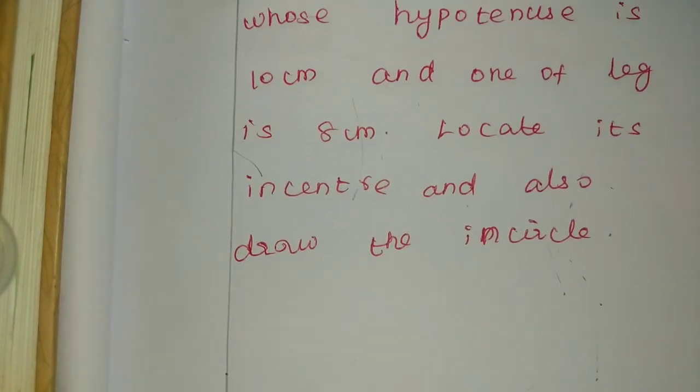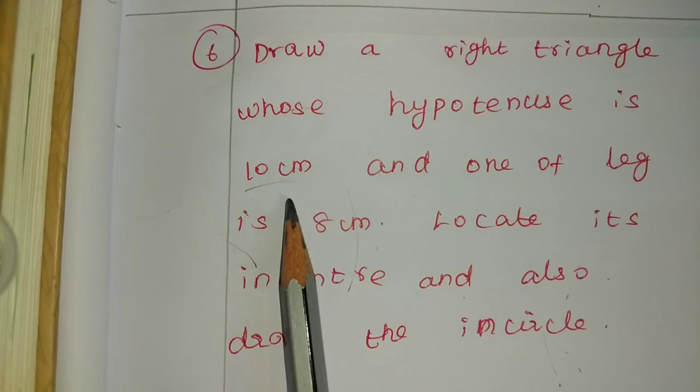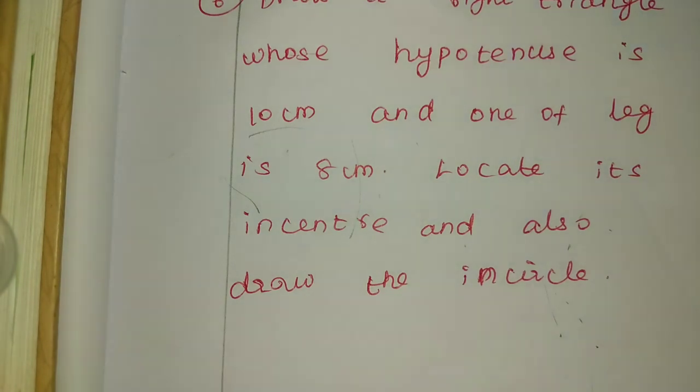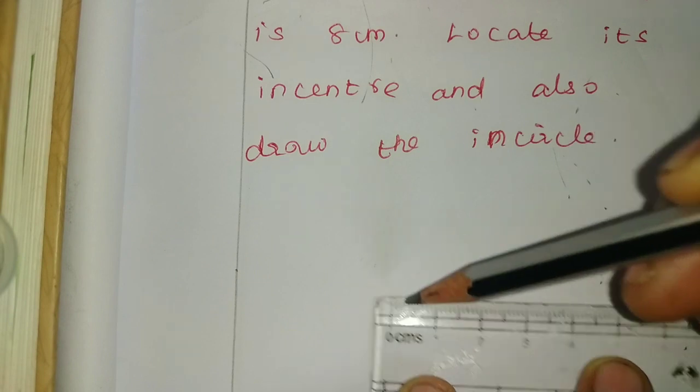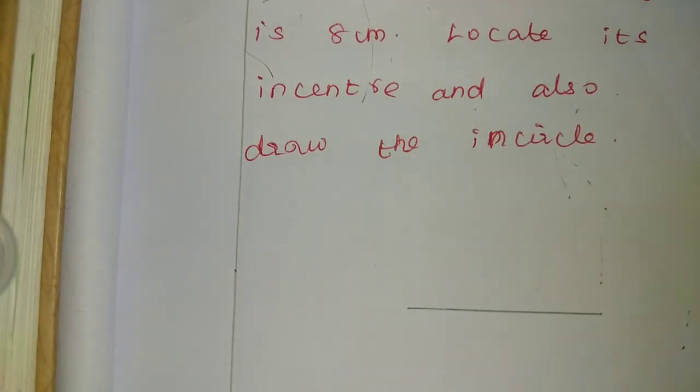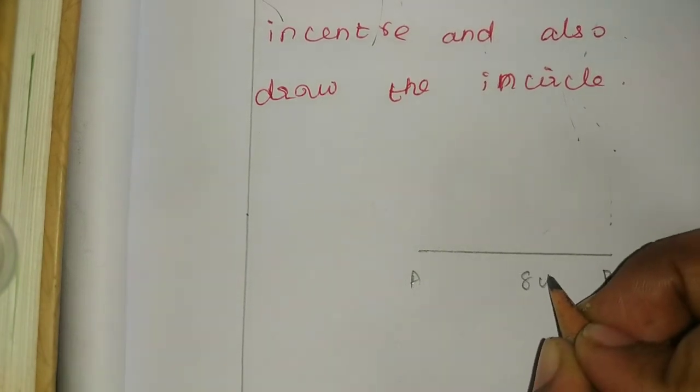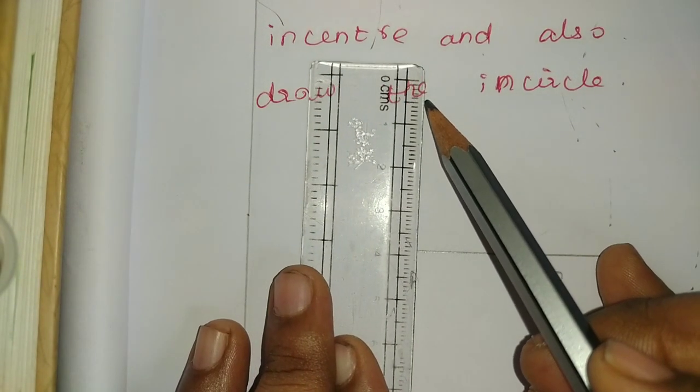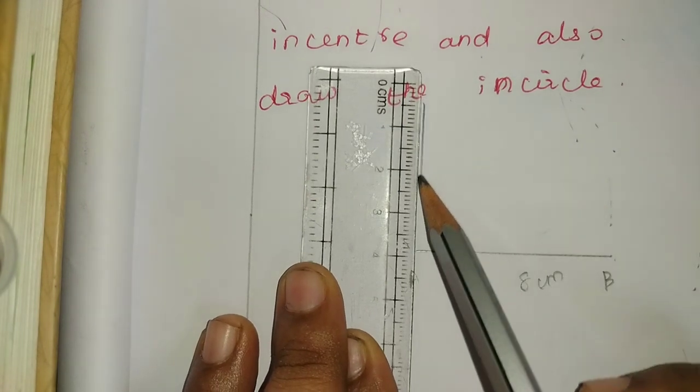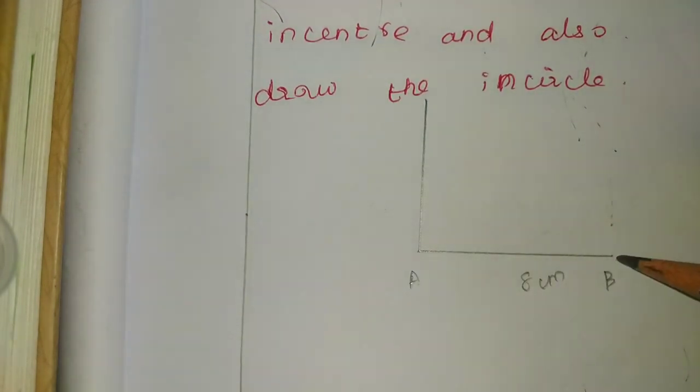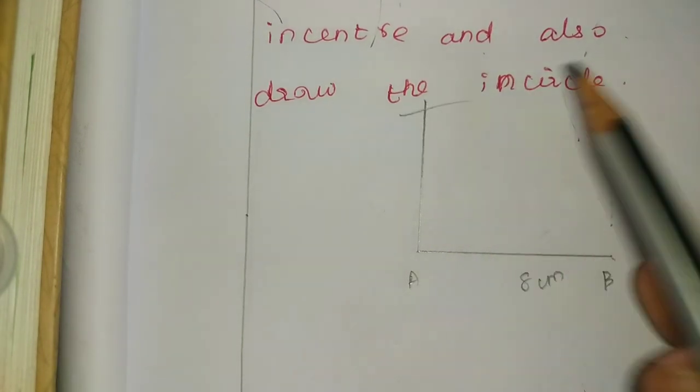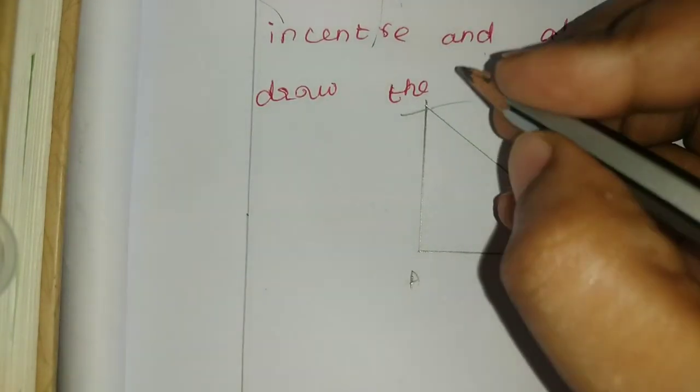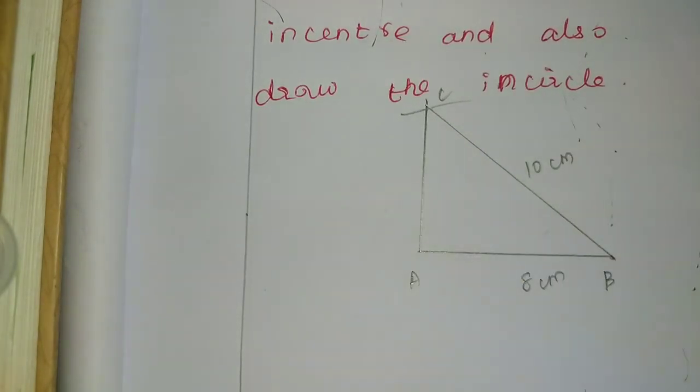So right triangle whose hypotenuse is 10 cm, one leg is 8 cm. First, rough diagram. One of the legs is 8 cm, next step is hypotenuse side. Right triangle has 90 degrees present. How to cut the arc, how to join. This is C, this is 10cm.